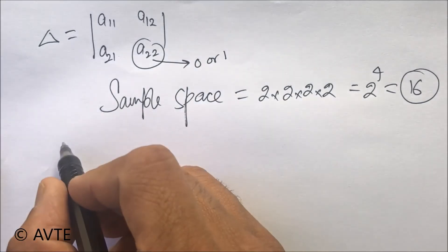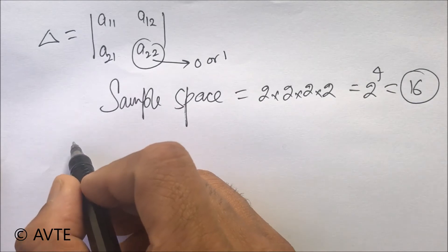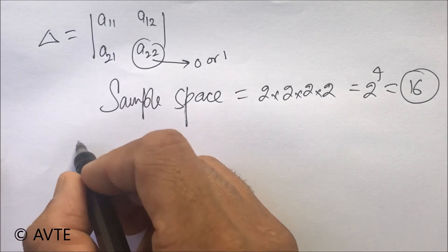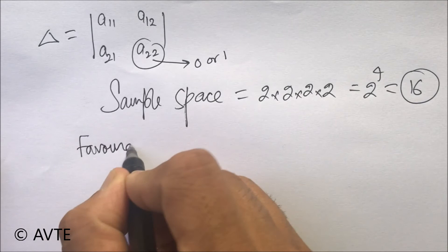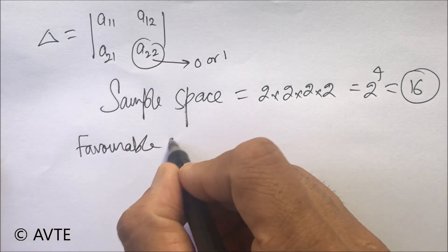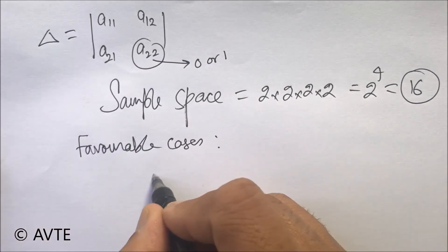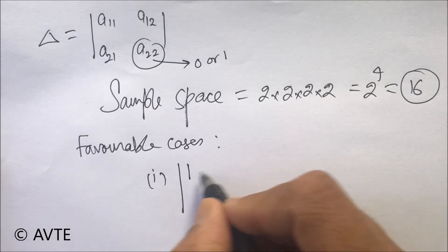Now they want the probability that the output is positive, that is determinant value is positive. So favorable cases. We can manually do it.